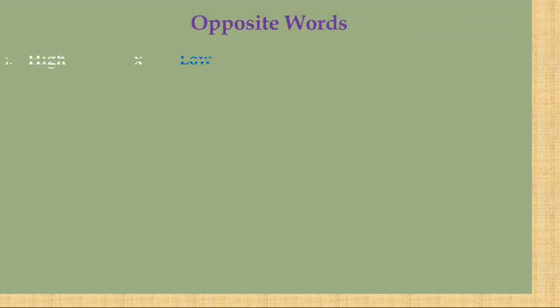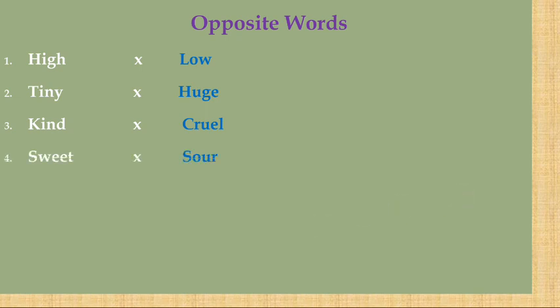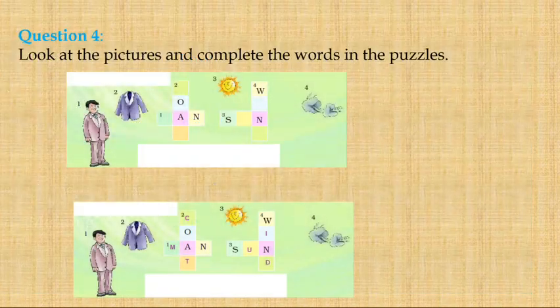Next opposite words: sweet (meetha) → sour / bitter (khatta/kadva); asleep (sona) → awake (jagana); morning (subah) → evening (shaam).